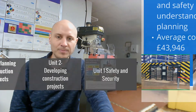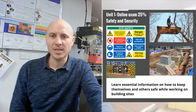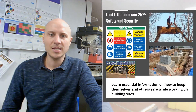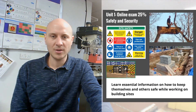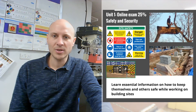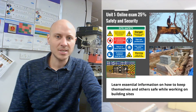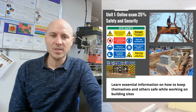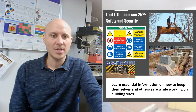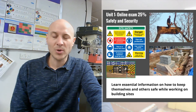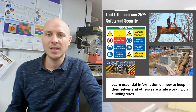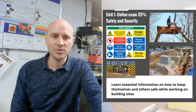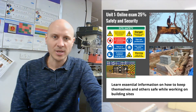Unit one is safety and security. This is an online exam and it's 25% of the overall mark. Here we look at things like safety signs, risk assessments, and how we can put control measures in place to stop people getting hurt. This is a really essential part of the construction industry.